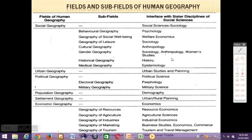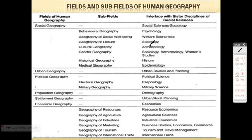Human Geography has six important sub-fields. These are: number one, Social Geography; number two, Urban Geography; number three, Political Geography; number four, Population Geography; number five, Settlement Geography; and number six, Economic Geography.